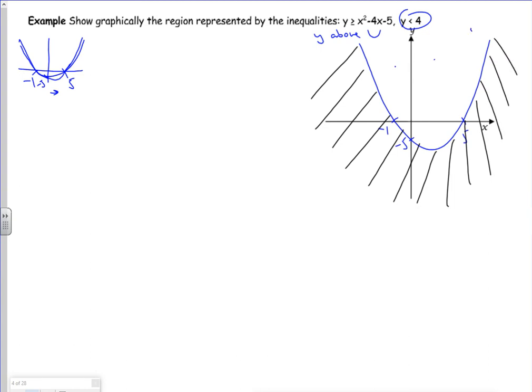So this says I want the y values above it, so I'm going to shade below it. So that's my y is greater than or equal to x squared minus 4x minus 5. Now we need to look at the line for y is less than 4. So if I put a line on at 4, so I've just got a line going across here.